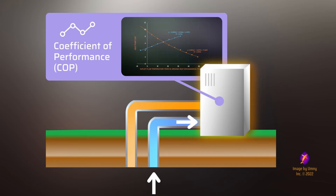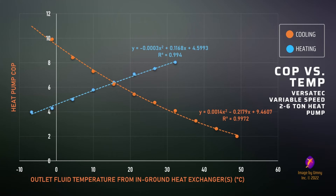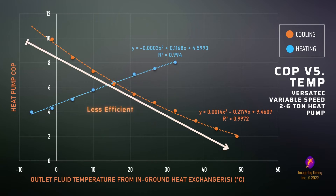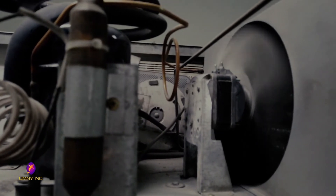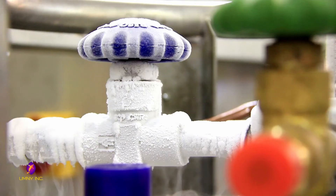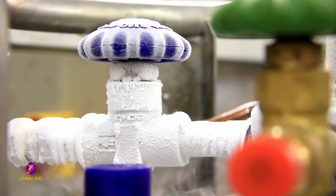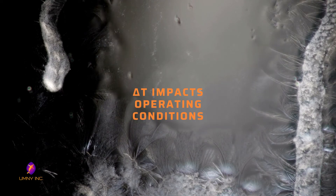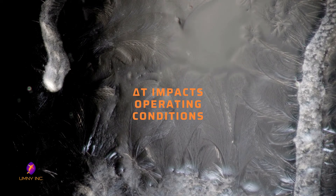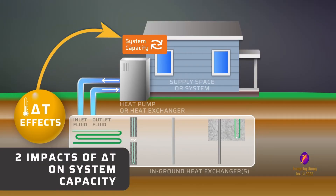Ground source heat pump manufacturers publish data in their manuals about the change in coefficient of performance as the fluid exiting the ground and entering the heat pump changes in temperature. This graph shows that the heat pump's efficiency in the heating mode reduces as the outlet fluid temperature from the ground reduces. Likewise, the cooling efficiency reduces as the outlet fluid temperature increases. All heat pumps have operating temperature limits, decided based on efficiencies, ability to transfer heat in the desired direction, and limitations of working fluids such as the freezing point of water. This means that a plus or minus 1 degree Celsius change in delta T can also move the system outside of a desirable operating range of temperatures.